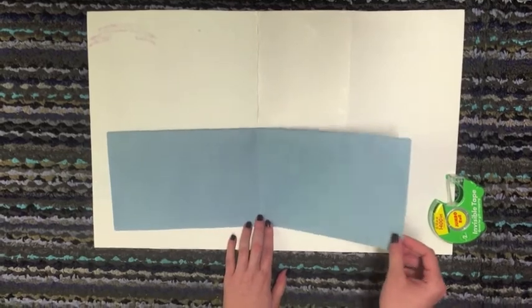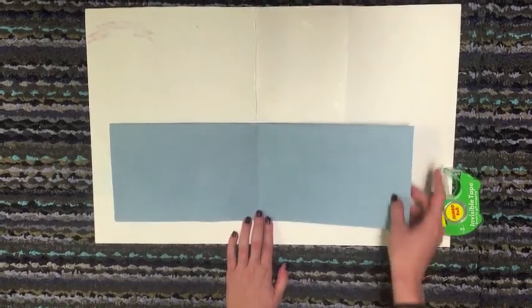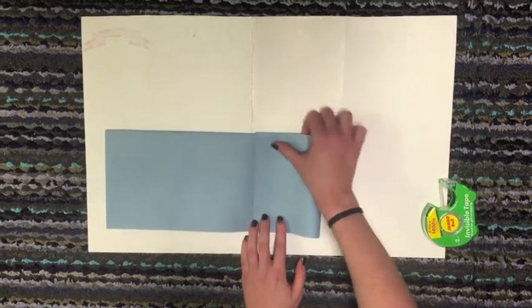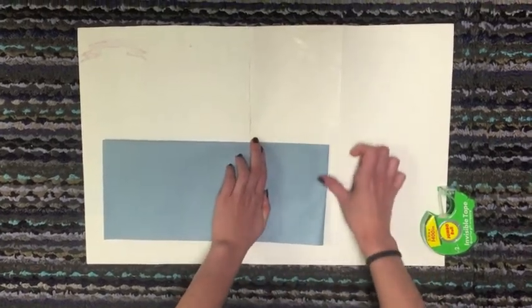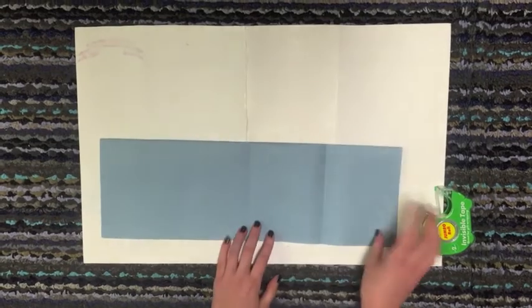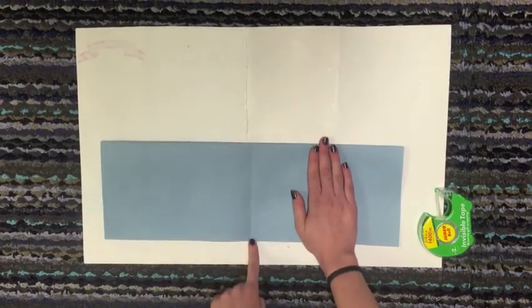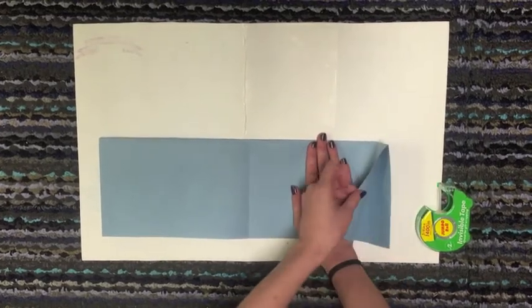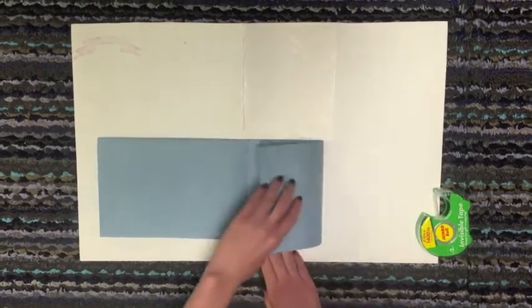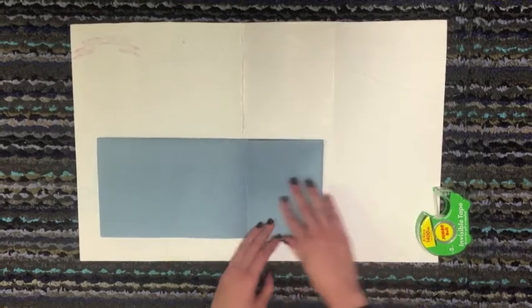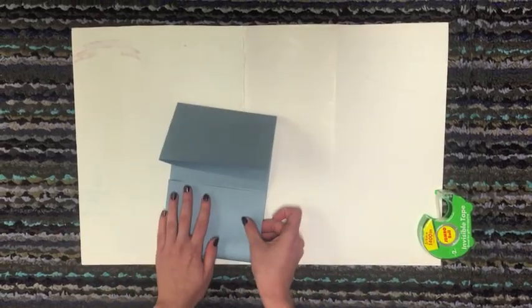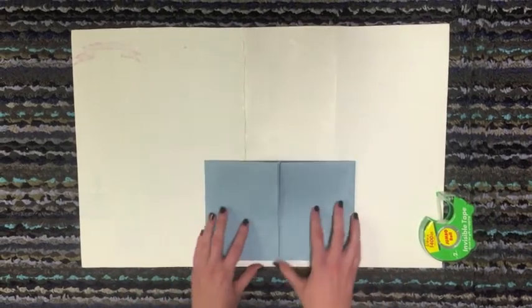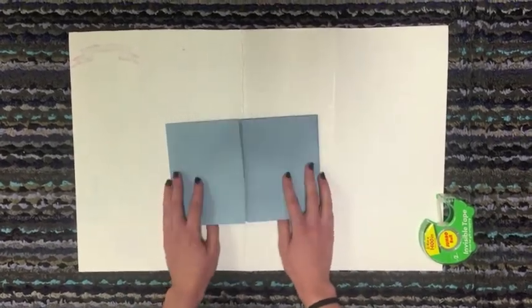Then you're going to take one of your sides, it doesn't matter which one. Take the sharp edge and turn it into the middle fold that you just made. So if you didn't catch that, first you had this ridge right here. You're going to take one side, the sharp edge with the flap, and turn it in. Then you're going to do the same thing with the other side. So right now you have two barn doors.